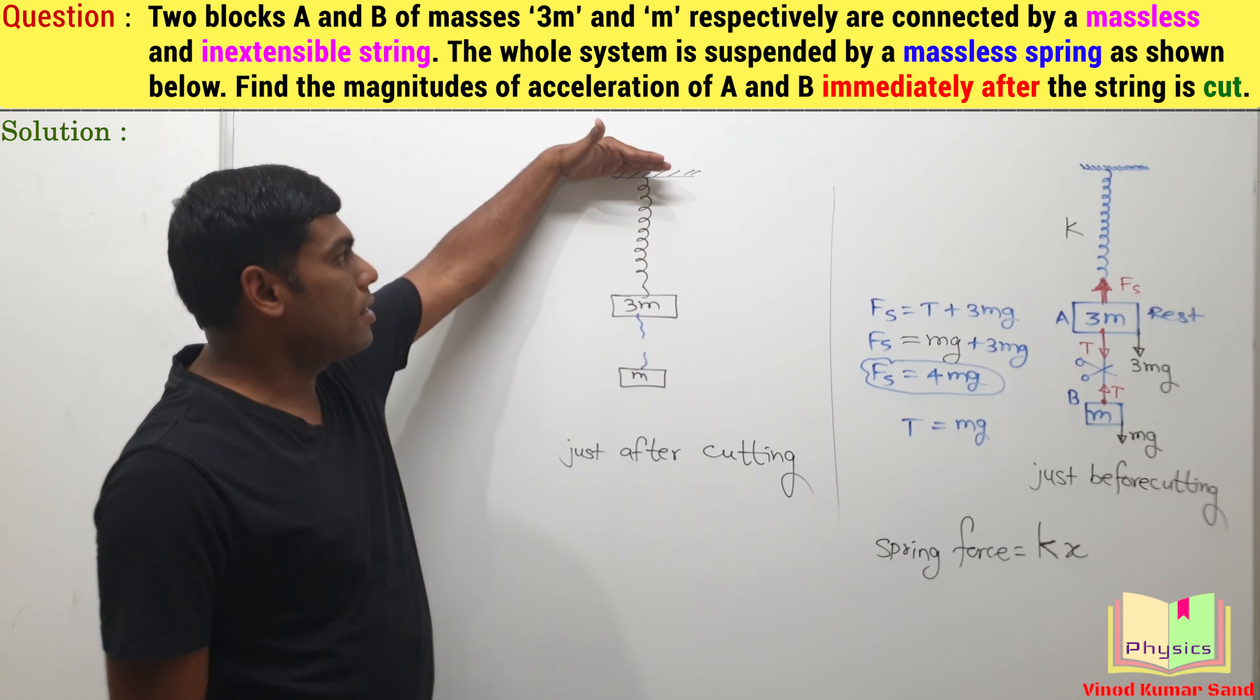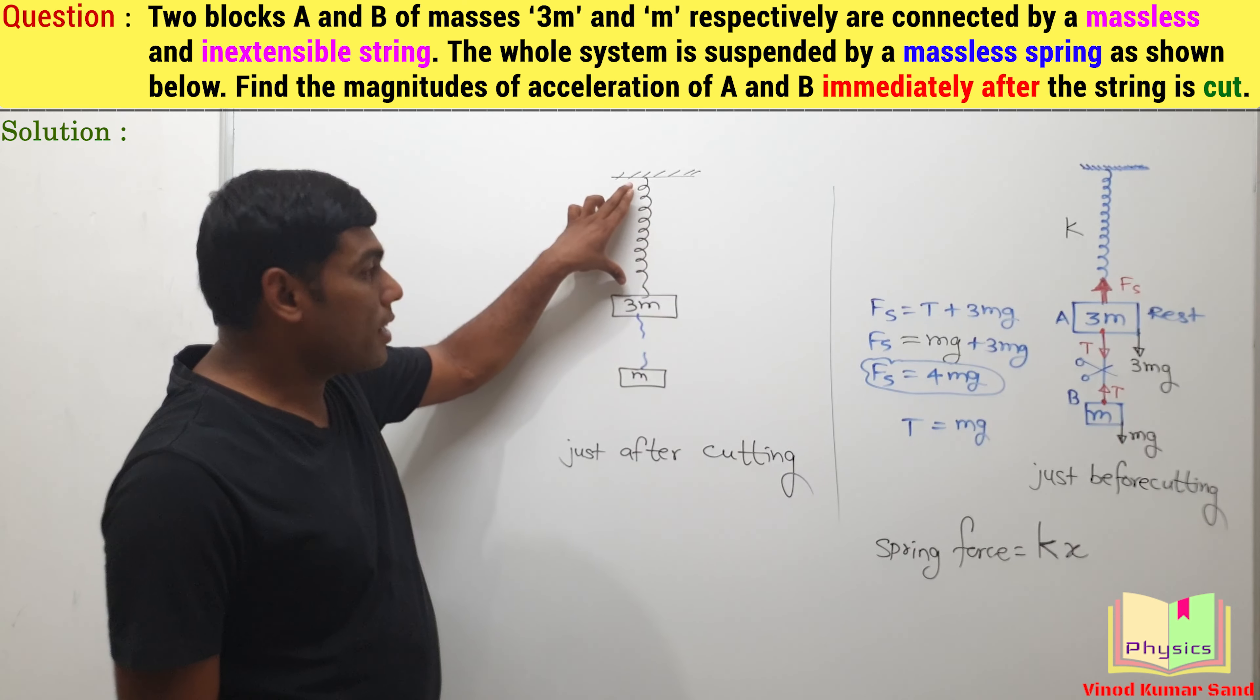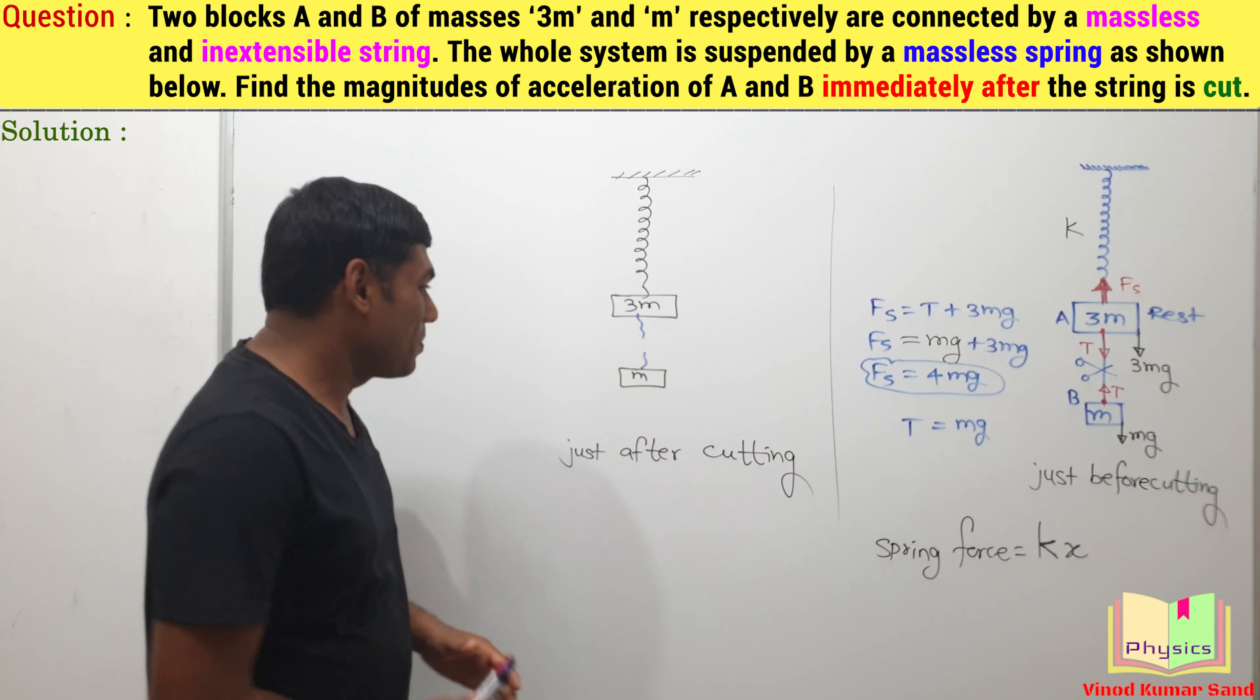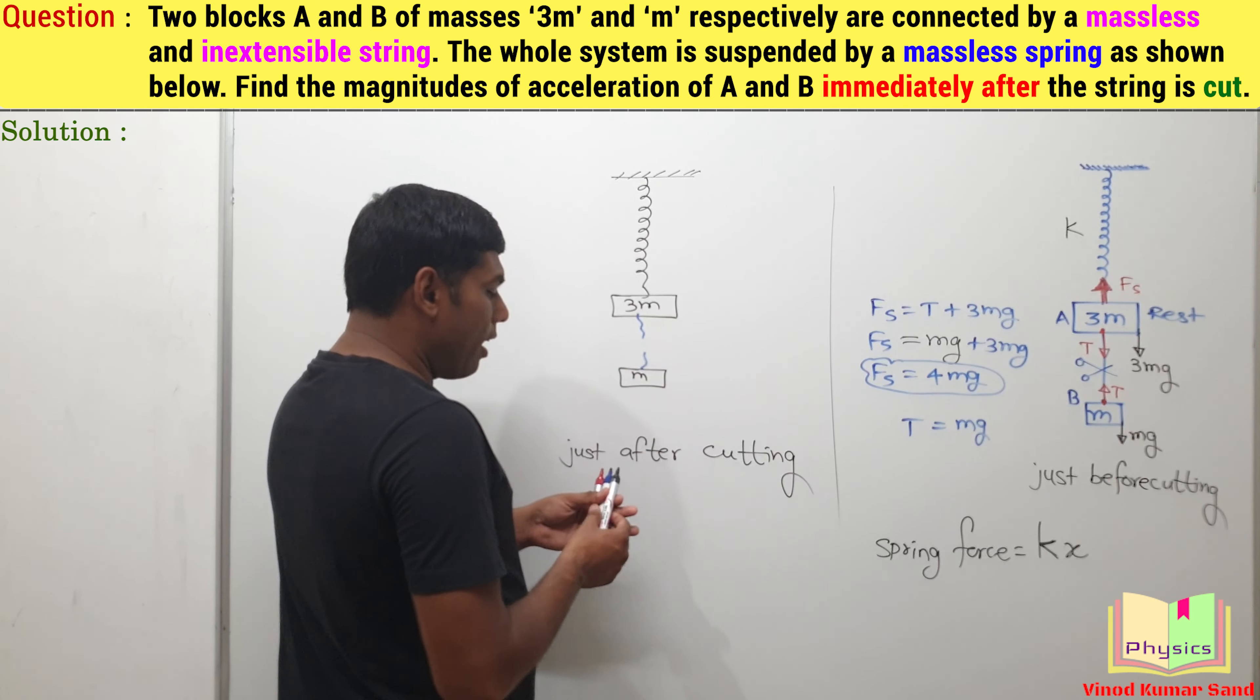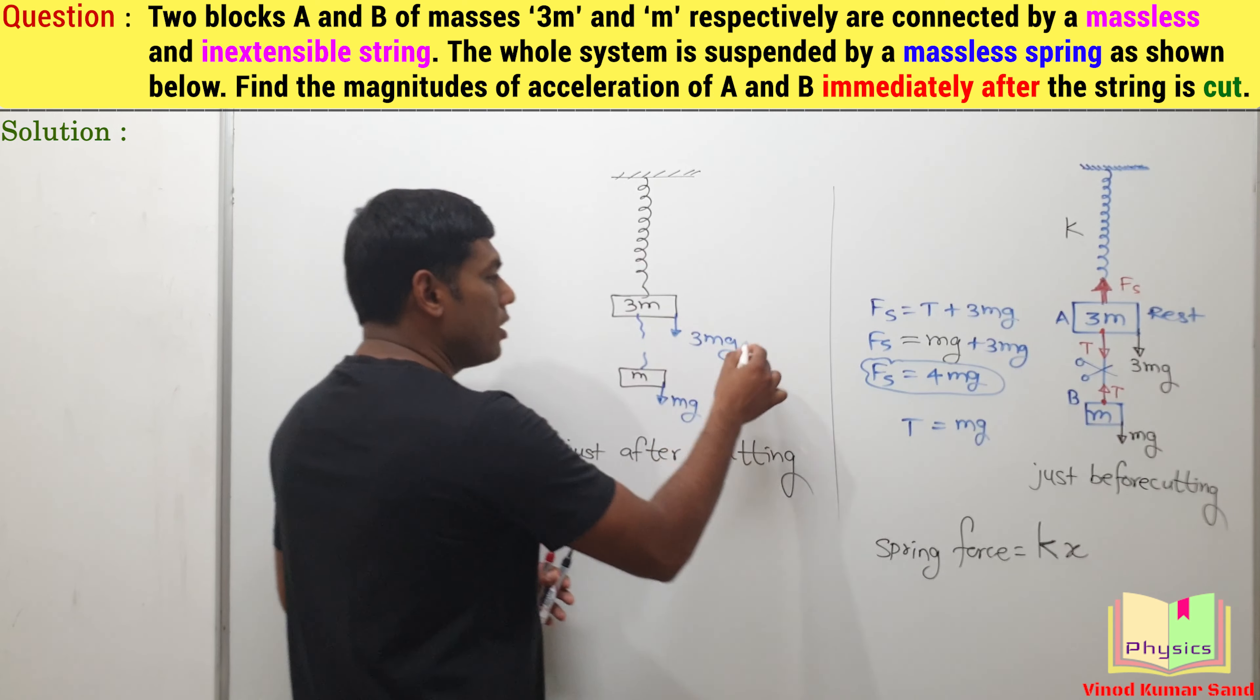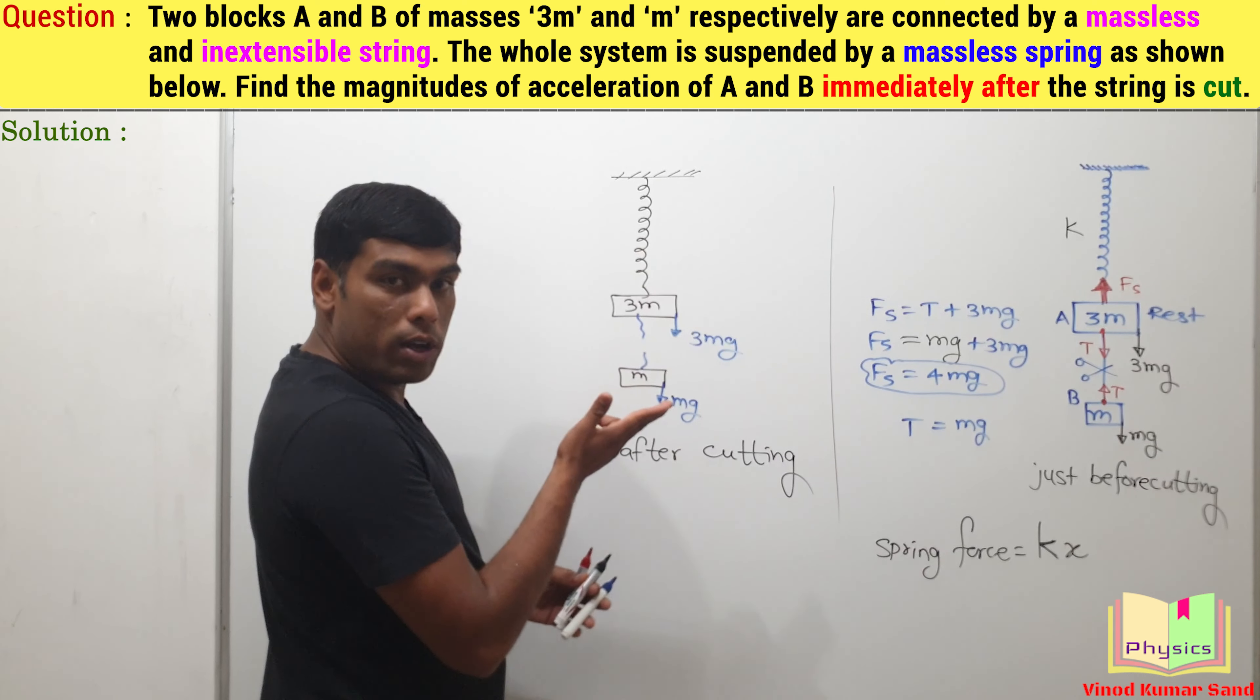Because here is the mass of the ceiling, here is this block having mass 3m. The spring is connected in between them. To change its length, it will require some time. So immediately after cutting, if we draw the free body diagram, the gravitational pull on this block is mg, here is 3mg. These two forces will remain intact as it is. As the string is broken, the tension here is 0.